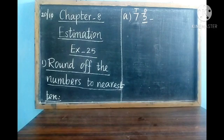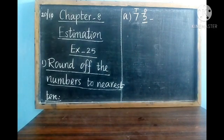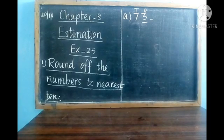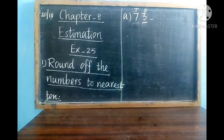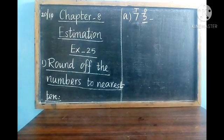If you want to round off to nearest hundred, which digit should be underlined? The next place value of hundreds is tens, so tens should be underlined. But here we are going to round off to nearest 10, so we have to underline the digit in the ones place.